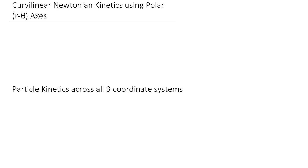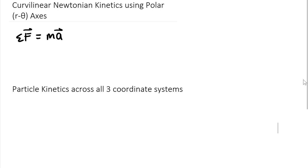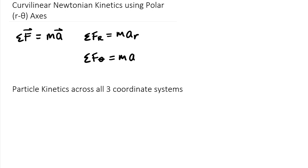Anytime you see the term Newtonian Kinetics, think: the sum of the forces as a vector equals mass times the acceleration as a vector. That is what Newtonian means, and the concept of kinetics is relating forces to motion — not just motion by itself, but forces to motion. If we apply this equation for r and theta, we have sum of forces in r equals mass times acceleration in the radial direction, and sum of forces in theta equals mass times acceleration in the theta direction.